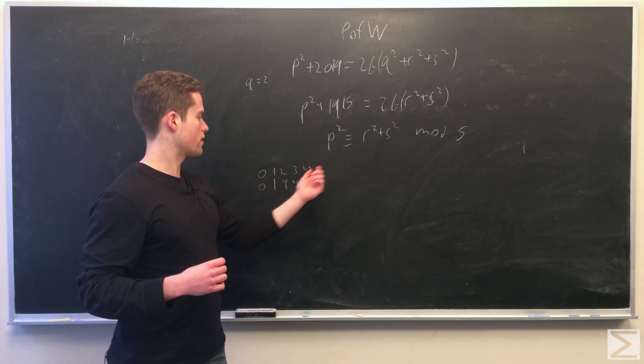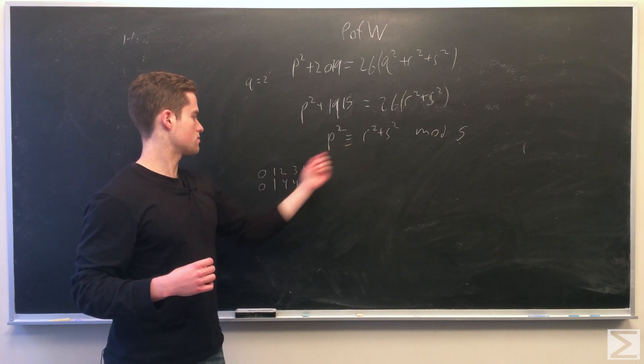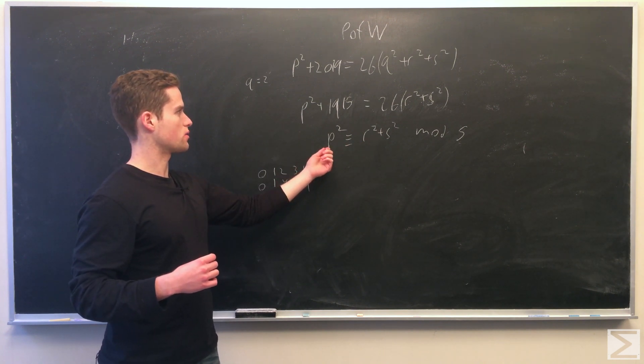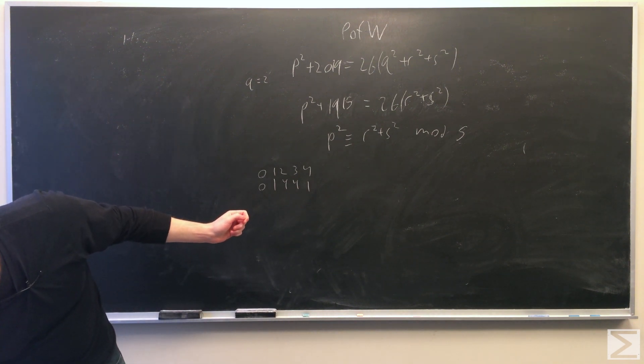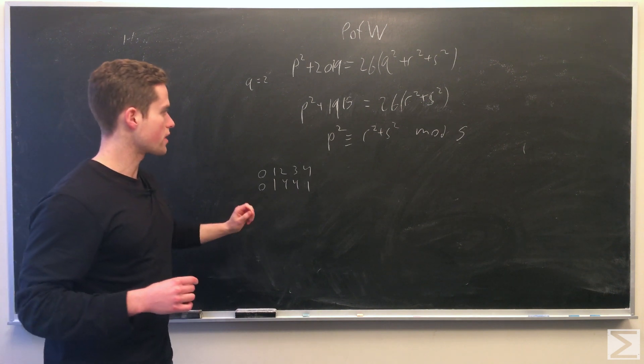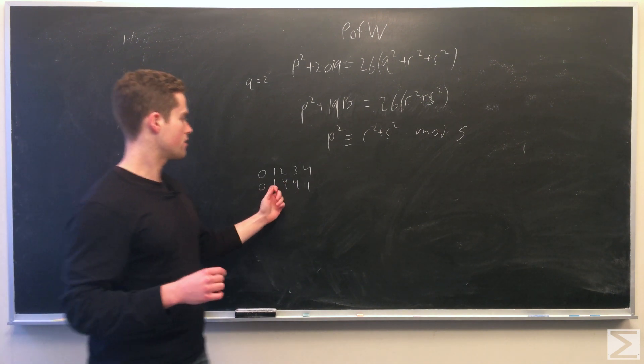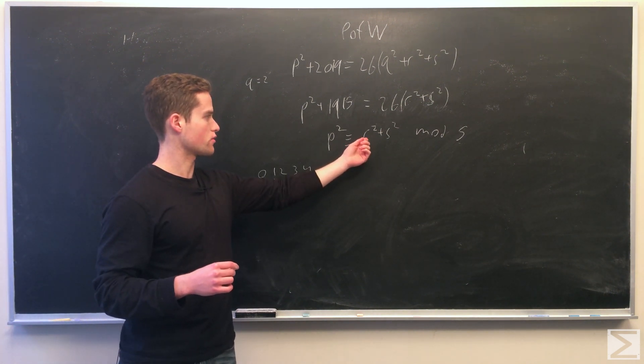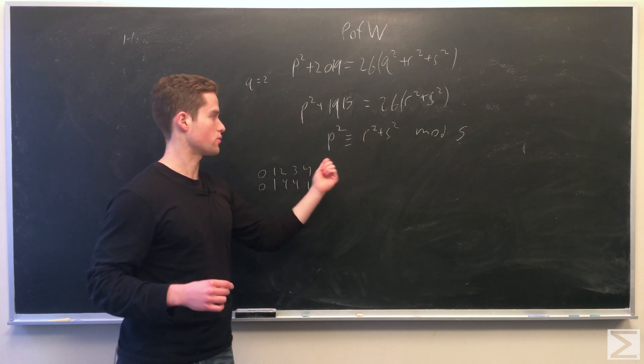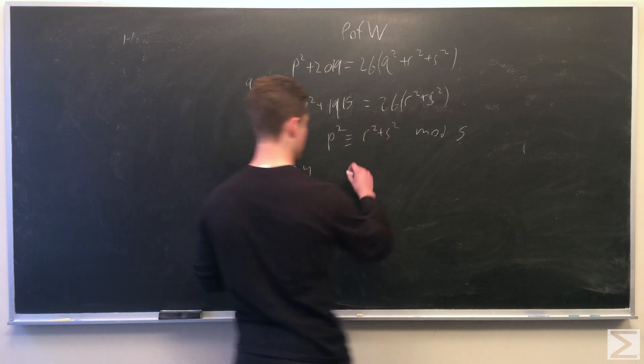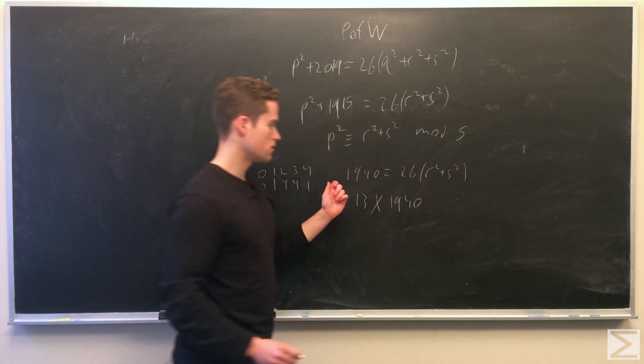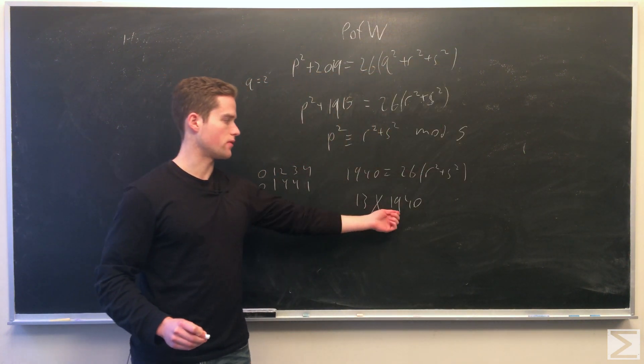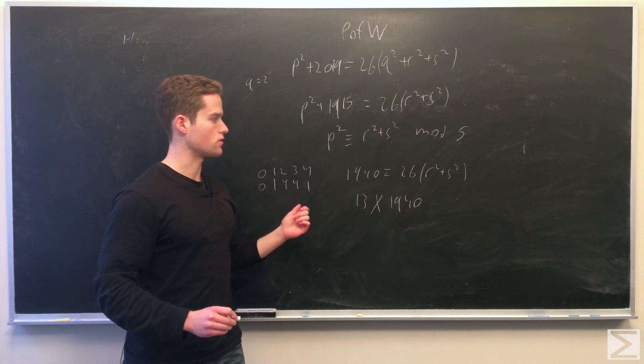So we're going to have r and s as 1 and 4, in which case p squared would be 5. One case we want to rule out: if we take r squared congruent to 1, s squared congruent to 4, vice versa, we're left with p equals 5. If p equals 5, we observe 13 does not divide 1940, so this is not a valid solution.